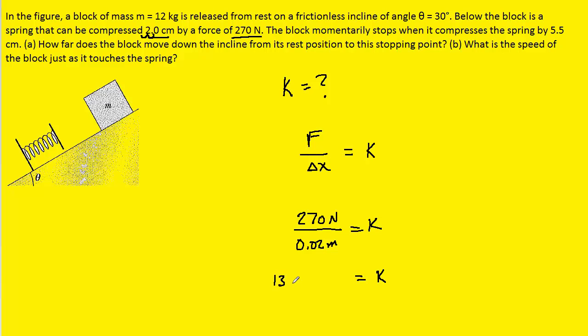And when we do that, we should get 13,500, and then the unit will be newtons per meter, as we can see from the equation. So this is the value of k. We're going to hold on to that and refer back to it later.